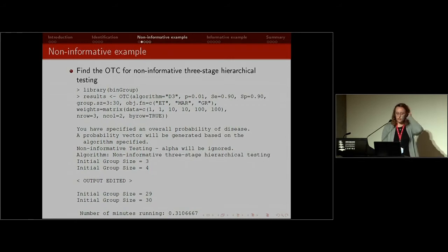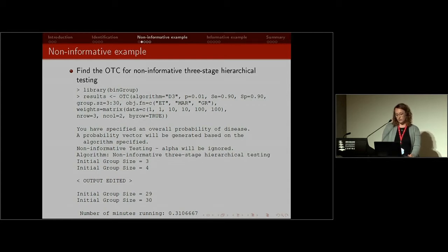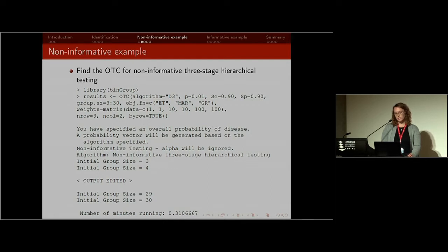Once you load the bin group library into R, here is an example showing non-informative three stage hierarchical testing. I've saved everything in results. You input the algorithm — in this case, three stage hierarchical is D3. You input a probability, the sensitivity and specificity, a range of group sizes (here I've given it three to 30), a set of objective functions — I've included all three — and then the weights argument is a matrix containing the weights for the GR function, which are subjectively chosen.